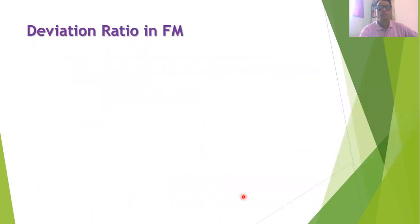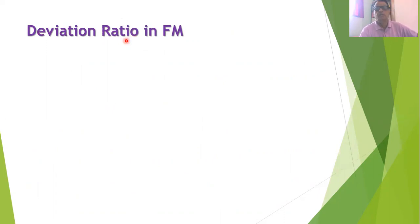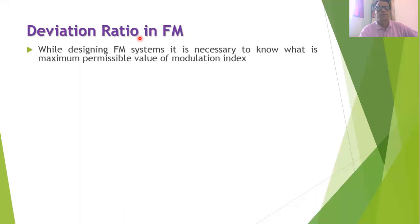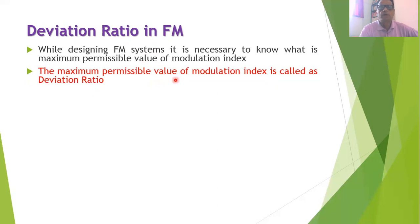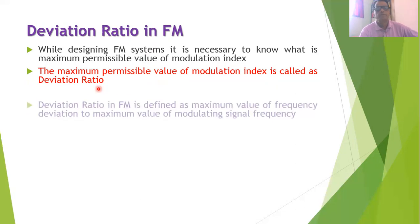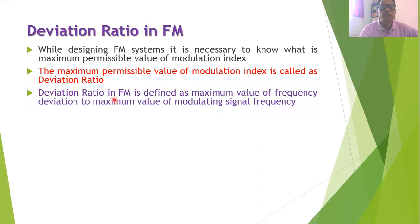Since the value of the modulating signal frequency and frequency deviation continuously change, the modulation index in FM may also change continuously. Therefore, another parameter is defined in FM called the deviation ratio. When designing FM systems, it is necessary to know the maximum permissible value for the modulation index, and this maximum permissible value is termed as the deviation ratio.